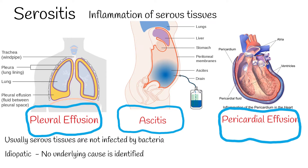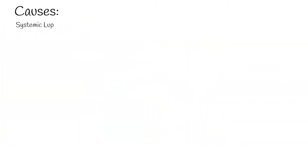Serositis can be idiopathic and recurrent, meaning we cannot identify an underlying cause. It can also be secondary to other diseases, including Systemic lupus erythematosus (SLE), for which serositis is one of the diagnostic criteria.